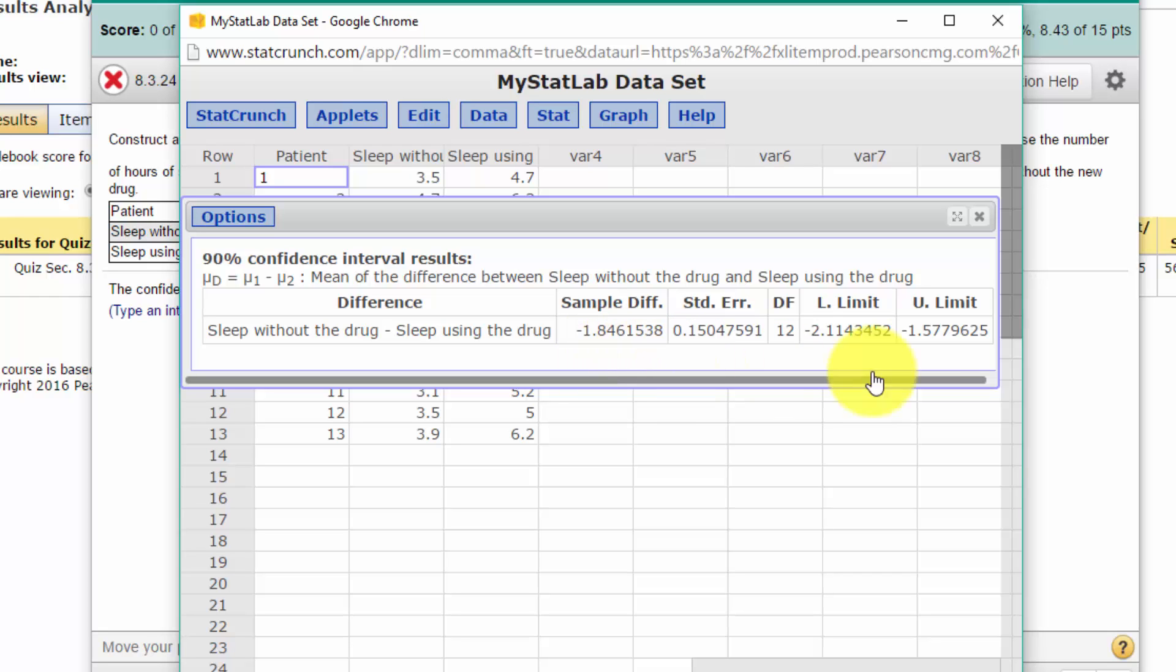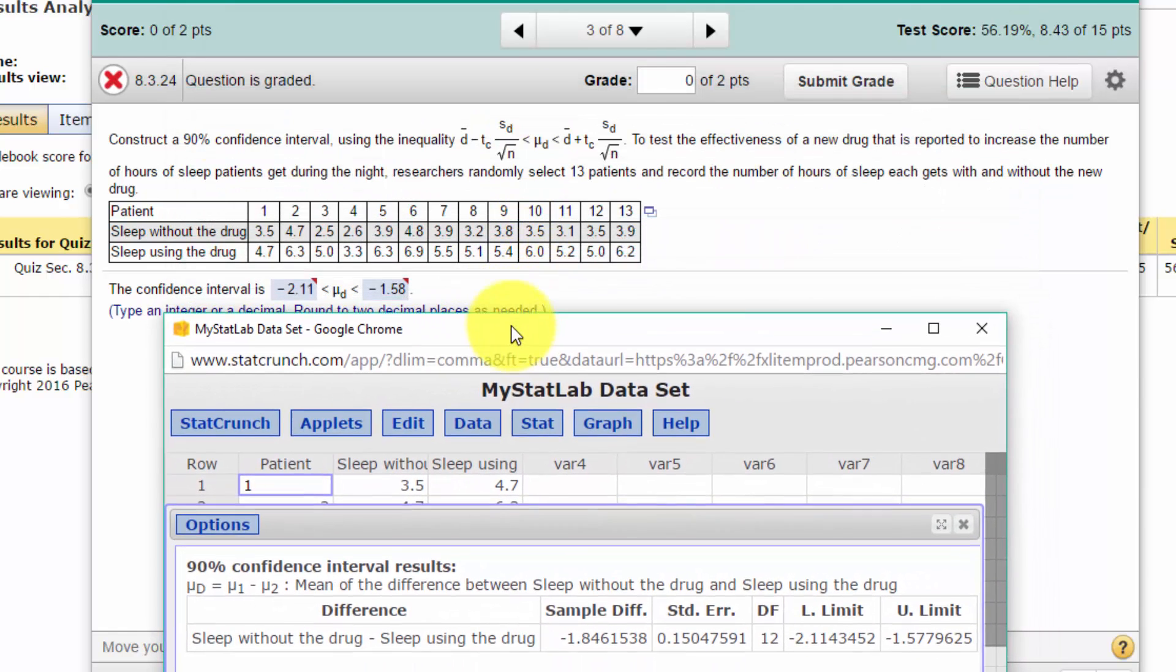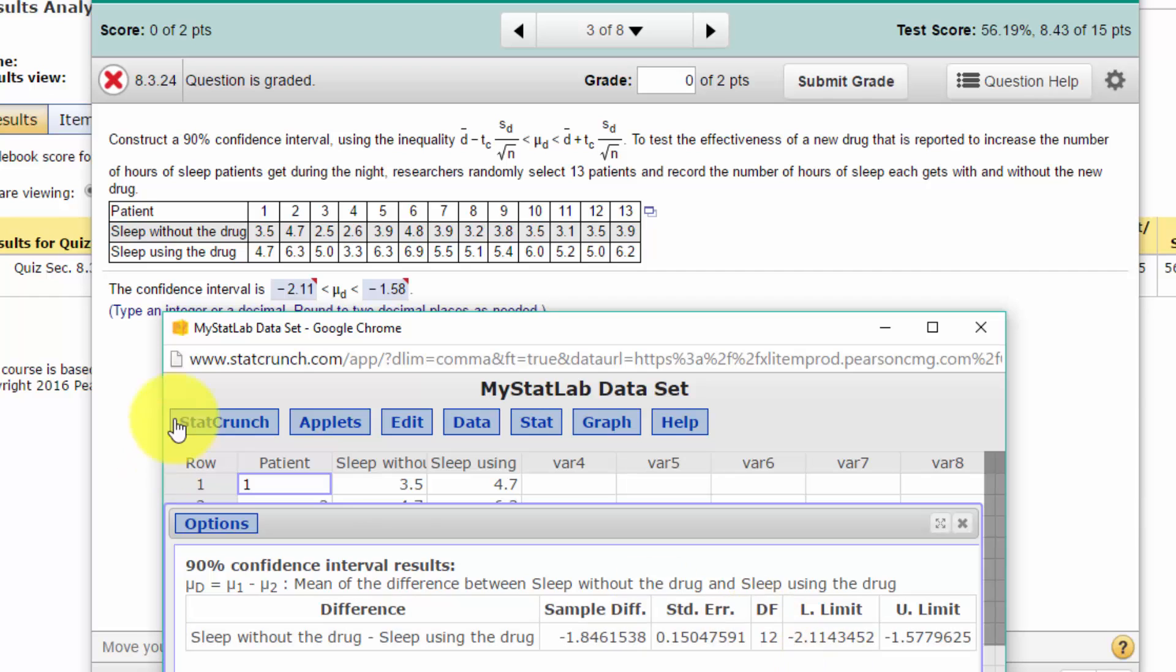Let's drag down and see—yes, that's the answer in MyStatLab: -2.11 for the mean difference to the upper limit of -1.58. So it's really fast.